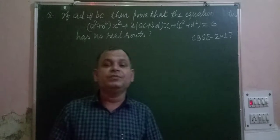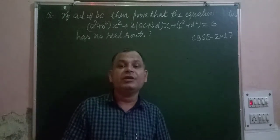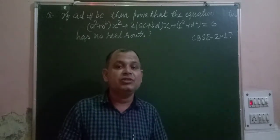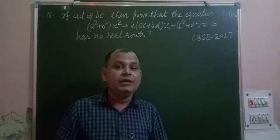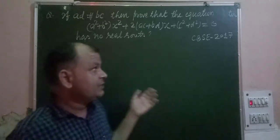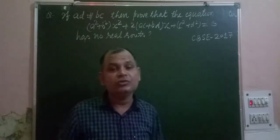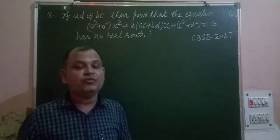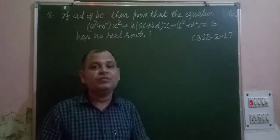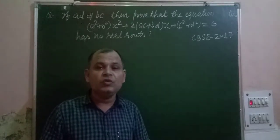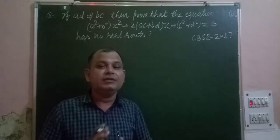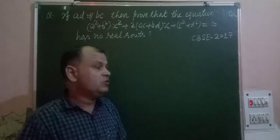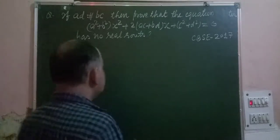As you know from the theory of roots, if a quadratic equation has discriminant less than zero, then we say it has no real roots — it has imaginary roots. So for showing this, we need to show that the discriminant D is less than zero.